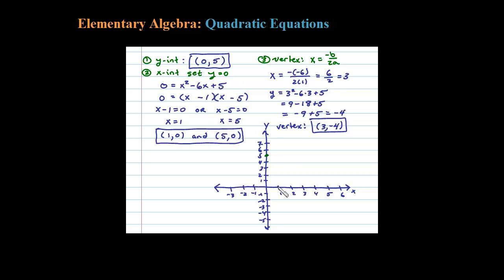The x-intercepts are at 1,0 and 5,0, so there's my 2 x-intercepts. My vertex occurs at 3 comma negative 4. Let's go ahead and connect the dots. That's about as best I can do on the computer here. Notice I have the y-intercept, my 2 x-intercepts, the vertex here at 3 comma negative 4, and I have another point here.